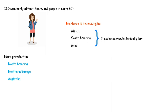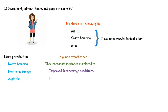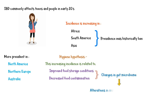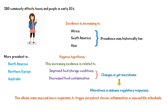The hygiene hypothesis suggests that this increase in incidence is related to improved food storage conditions and decreased food contamination, which in turn causes changes in gut microflora. This may eventually lead to alterations in immune regulatory responses in the gut, allowing some mucosal microorganisms to trigger persistent, chronic inflammation in genetically susceptible individuals.